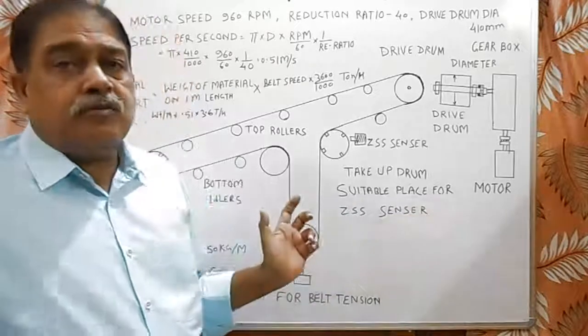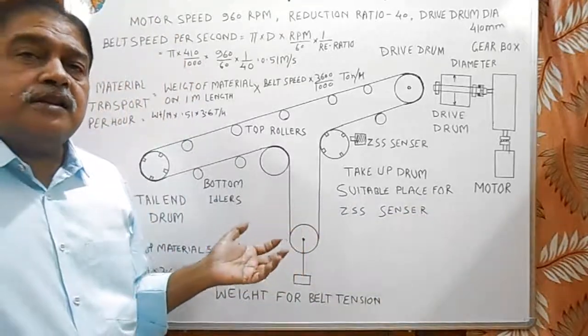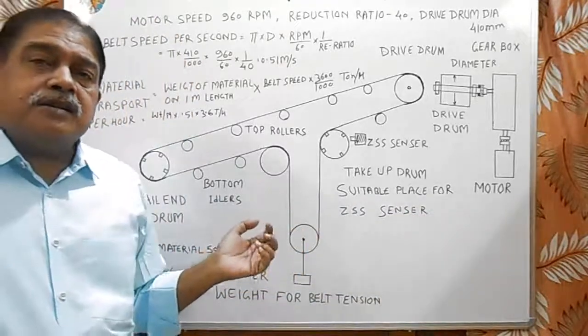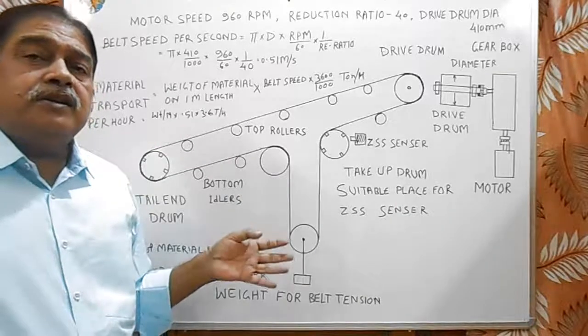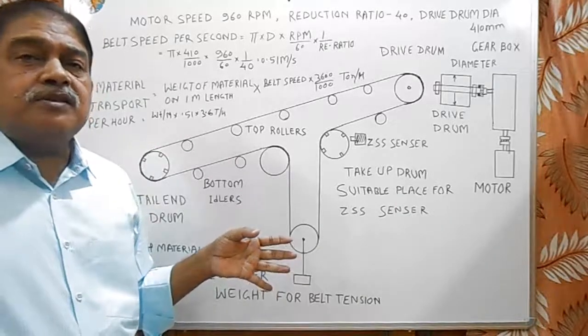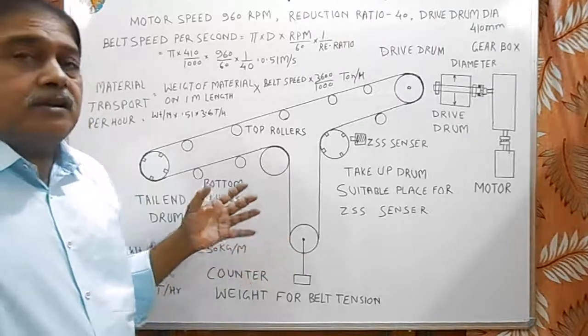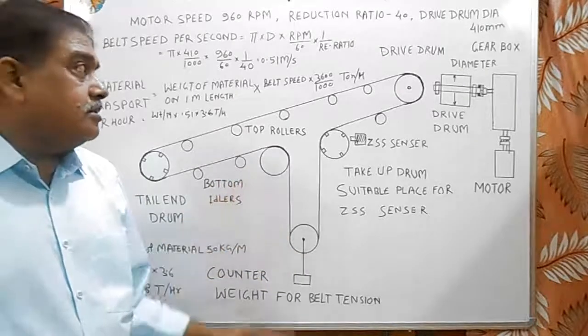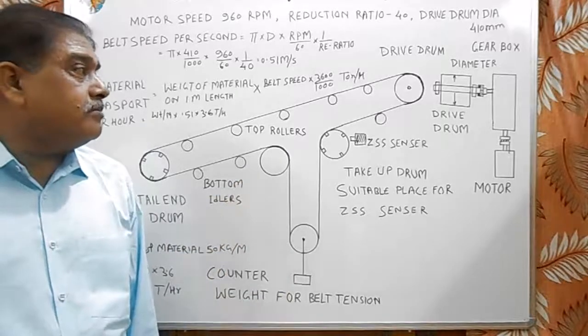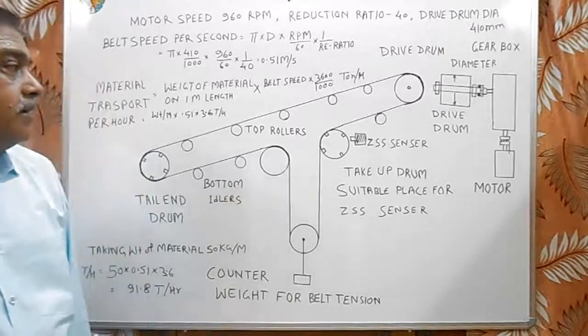And there is a control room, where in the control desk there is remote start button, remote stop button, and one auto local selection switch. And there are indications in the panel. So, this is the simple introduction to the belt conveyor.